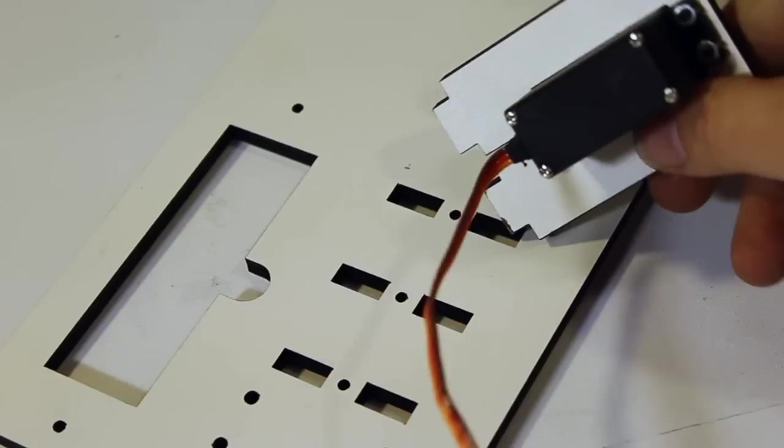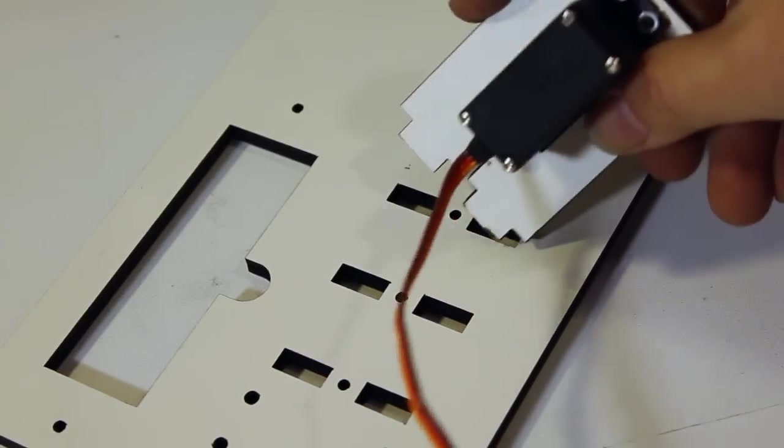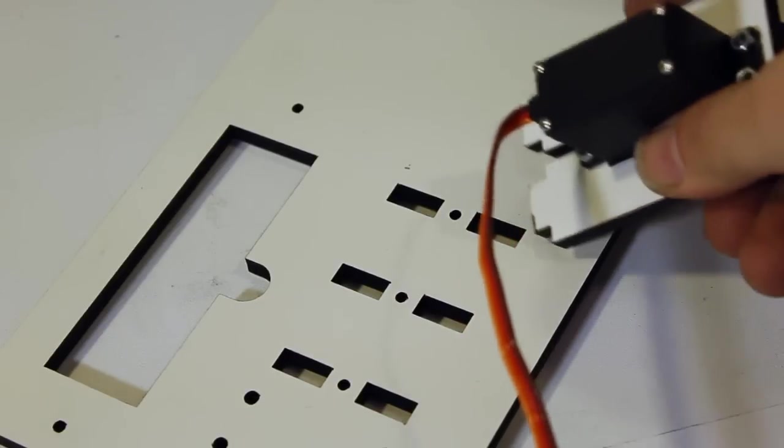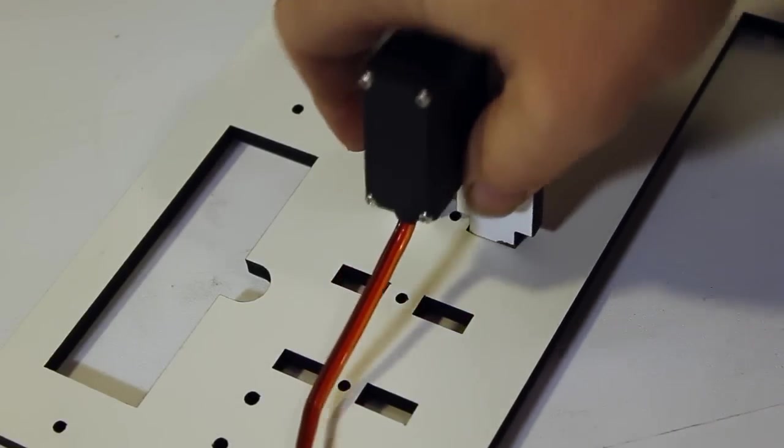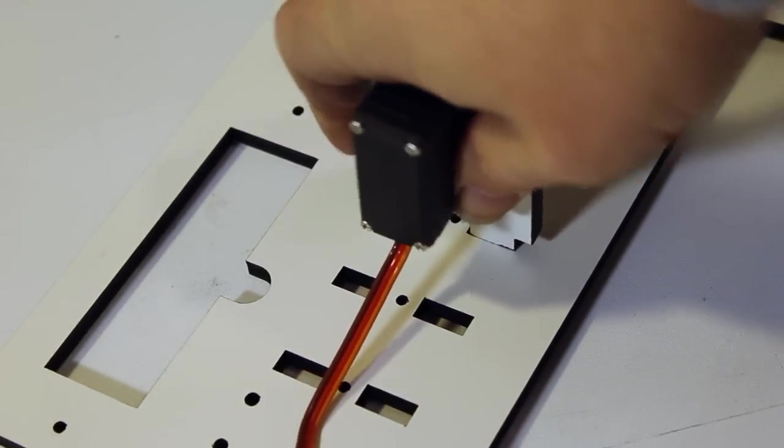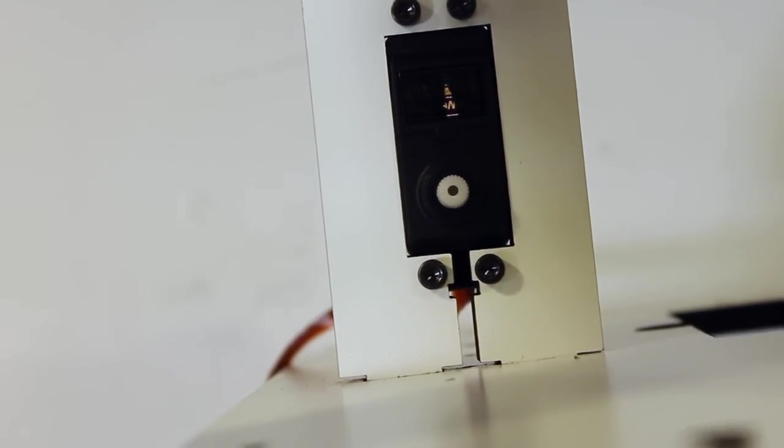Mount the servo mount into the slots. Start with the slots closest to the spool for now, and then later you can make adjustments if you feel like you need to change how close it is to the spool. You can lock that in with a square nut and a 25mm screw, just like we did with the motor mount.